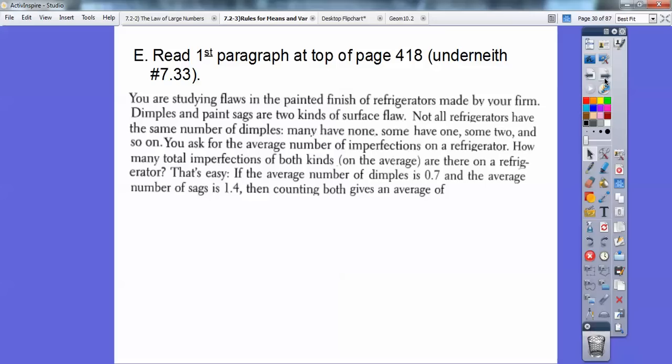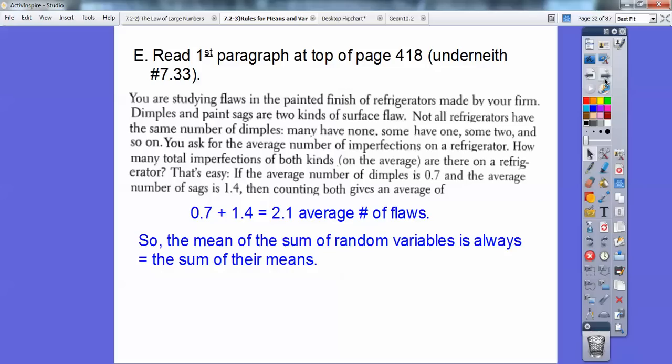So, that's easy. If the average number of dimples is 0.7 per refrigerator and the average number of sags is 1.4, then counting both gives an average, and this is where you pick up your pencil, because I want you to write this down. So, 0.7 plus 1.4 equals an average of 2.1 number of flaws per refrigerator. So the mean of the sum of the random variables is always equal to the sum of their means. Easy enough.